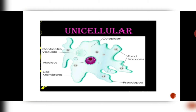Here is a diagram of amoeba. Can you see clearly — there is a plasma membrane or the cell membrane, there is a specific nucleus, a contractile vacuole which helps in the movement of the amoeba, and pseudopodia or the false feet which help in engulfing the food.